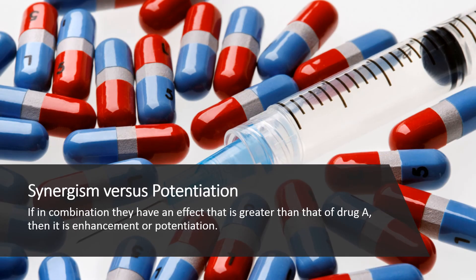Let us consider another simple situation where two drugs, A and B, are combined. If drug A has an effect and drug B has no effect, but in combination they have an effect greater than that of drug A alone, then it is enhancement or potentiation. We can describe the effect simply as percent enhancement or fold of potentiation. If A and B alone each has an effect, then in combination they may produce a synergistic, an additive, or an antagonistic effect. By definition, synergism is an effect that is more than additive, whereas antagonism is an effect that is less than additive. Defining what is an additive effect is the most crucial criterion for defining synergism and antagonism.